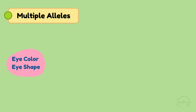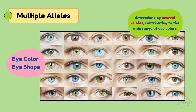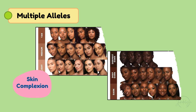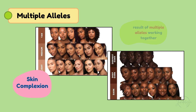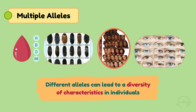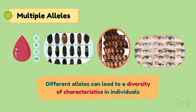Similarly, eye color and eye shape are determined by several alleles, contributing to the wide range of eye colors we see — like blue, green, and brown — as well as differences in shape. Even skin complexion, ranging from lighter to darker shades, is a result of multiple alleles working together. These traits show us how the interaction of different alleles can lead to a diversity of characteristics in individuals.